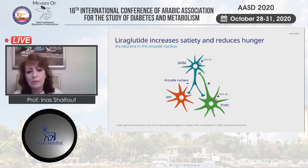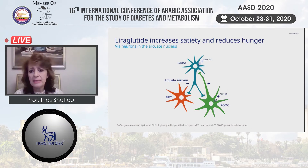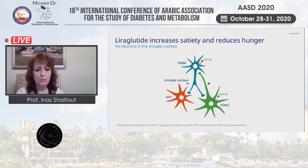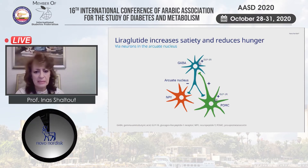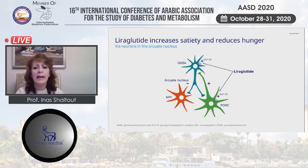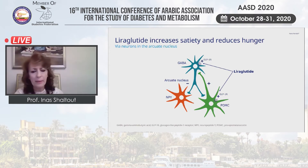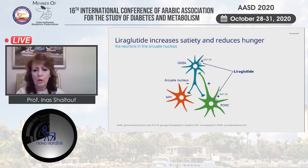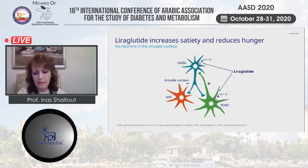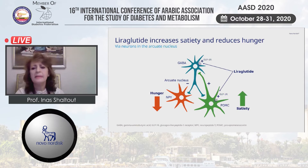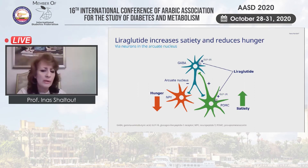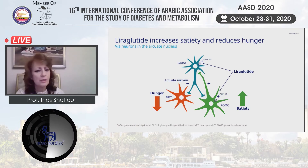Liraglutide increases satiety and reduces hunger through neurons in the arcuate nucleus. Liraglutide affects GLP-1 receptors present on the AgRP and also on the POMC nucleus, leading to increased satiety, and on the arcuate nucleus, leading to reduction of hunger sensation.